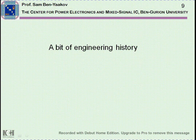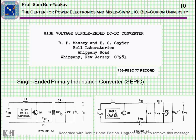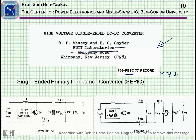Let me say a few words about the evolution of this SEPIC converter, which I think is kind of interesting. The first time the converter is described in the literature is in this paper by Massey and Snyder from Bell Laboratories. It was published in 1977 at the PESC conference — Power Electronics Specialist Conference — which doesn't exist anymore under this name; it's been combined with another conference. This is the first time we understand what SEPIC — a strange name — stands for: Single Ended Primary Inductance Converter.